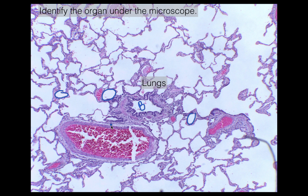The bronchioles have that deep purple epithelium. The arterioles are either going to be filled with red blood cells — which is what we see here — or empty. What you're missing in the arterioles is that deep purple epithelium; that's not going to be present in the arterioles. So those are our arterioles.